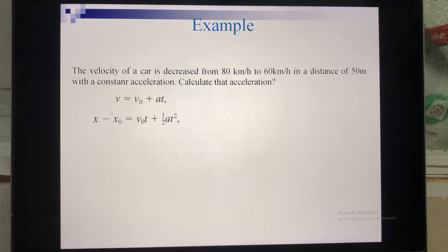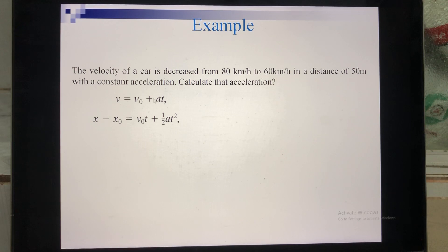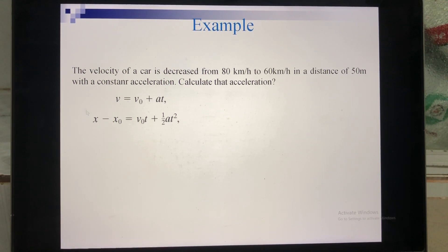To calculate acceleration, look at the first formula: you need A but you also have unknown t — one equation, two unknowns, so you cannot solve it alone. Look at the second expression for x: it also contains t and A, so again you cannot solve it independently. You must combine both equations: get t from the first equation and substitute into the second.